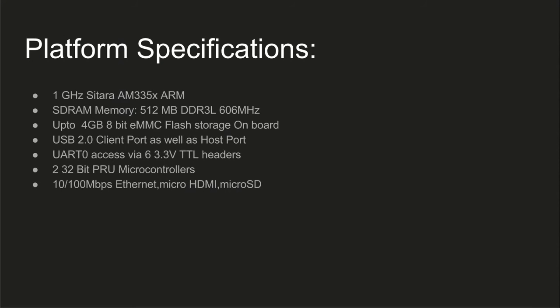BeagleBone has a 1 GHz Sitara AM335X ARM-based processor and 512 MB SDR RAM memory. It has up to 4 GB of 8-bit eMMC flash storage on board. For connectivity, it has a USB 2.0 client as well as host port, UART zero access via 6 3.3V TTL headers for serial debug, 2 additional 32-bit RISC microcontrollers called PRUs or Programmable Real-Time Units, an Ethernet port, a micro HDMI port, and a micro SD slot.